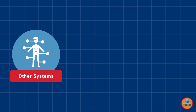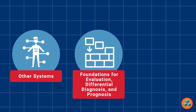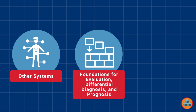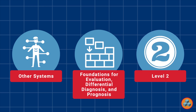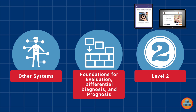System Classification: This question is an Other Systems question, which represents approximately 21% of all exam items. Content Outline Classification: The question is a Foundations for Evaluation, Differential Diagnosis, and Prognosis question, which represents approximately 33% of all exam items. Level Classification: This is a Level 2 question since it requires students to integrate numerous pieces of information or to apply knowledge in a given clinical scenario. Remediation of Level 2 questions occurs by increasing flexibility with academic content and by carefully analyzing decision-making processes when answering applied examination questions.